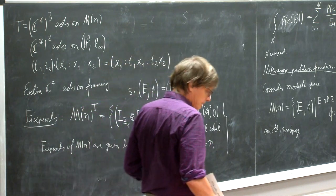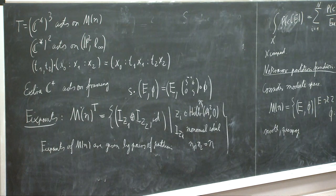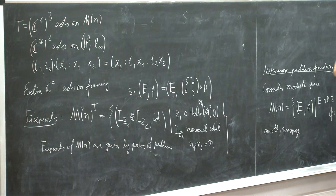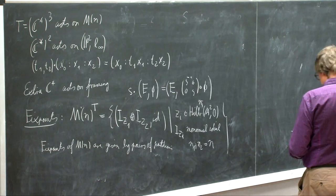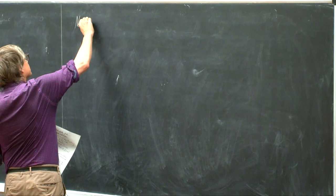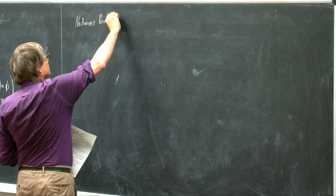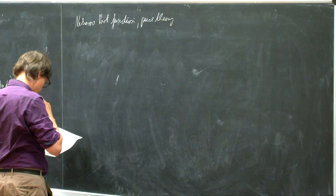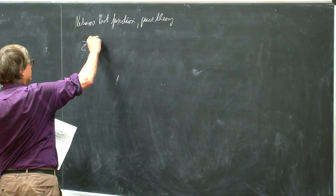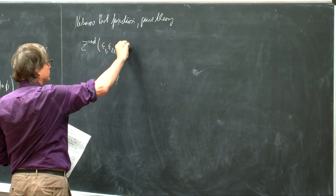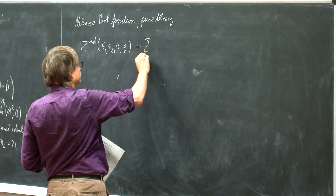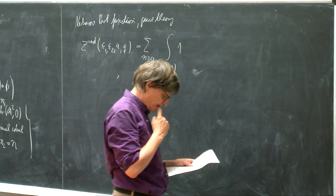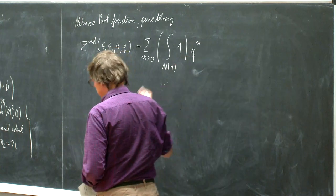And now the Nekrasov partition function is that we want to integrate something over this using the localization formula I just described. The simplest version is the pure theory. In this case the partition function — actually the instanton part — Z(epsilon_1, epsilon_2, A, Q) would be the sum over all N bigger or equal to 0, the generating function of the integral over this moduli space of 1, times Q to the N, where we use localization. So this will be an element in the field of rational functions in epsilon_1, epsilon_2, A, where we just apply the localization formula from before.